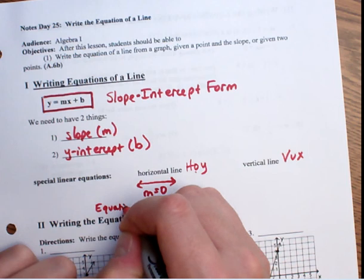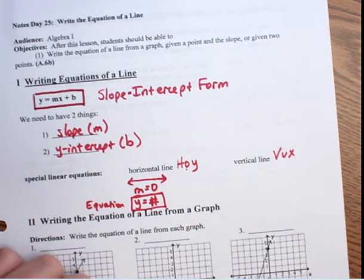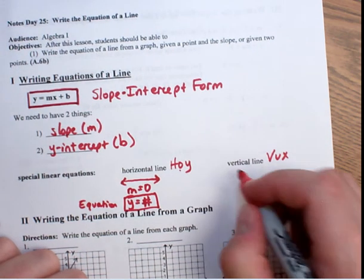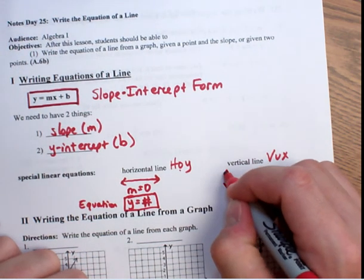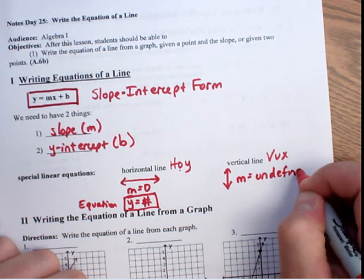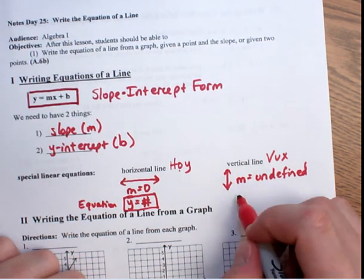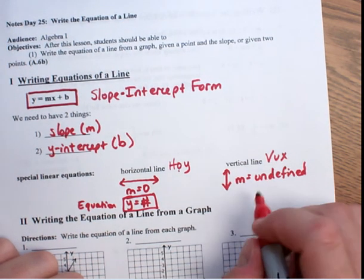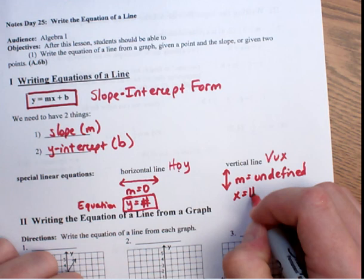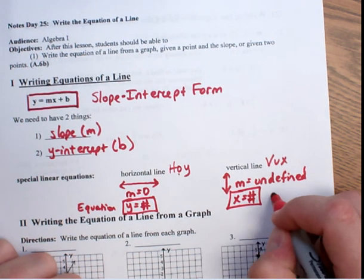We want this equation right here. Now, for VUX, vertical line is up and down. The slope is undefined. The equation of a vertical line, that's where the x comes into play, x equals a number. And what that is, is the equation.